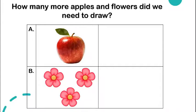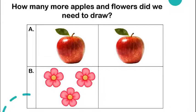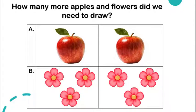Good day everyone. Today we'll have your first lesson in Block 9. We'll start with the question: how many more apples and flowers did we need to draw? In apples, we need to draw one more apple because there is one apple drawn on the screen, while in flowers we need to draw three more flowers because there are three flowers drawn on the screen.